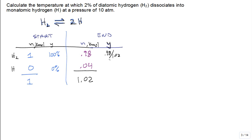Is the mole fraction of H₂ going to be slightly above or below 98%? Slightly below 98%. And the mole fraction of H is 0.04 divided by 1.02. That table really helps — if you've got the table down, you've essentially solved the problem.